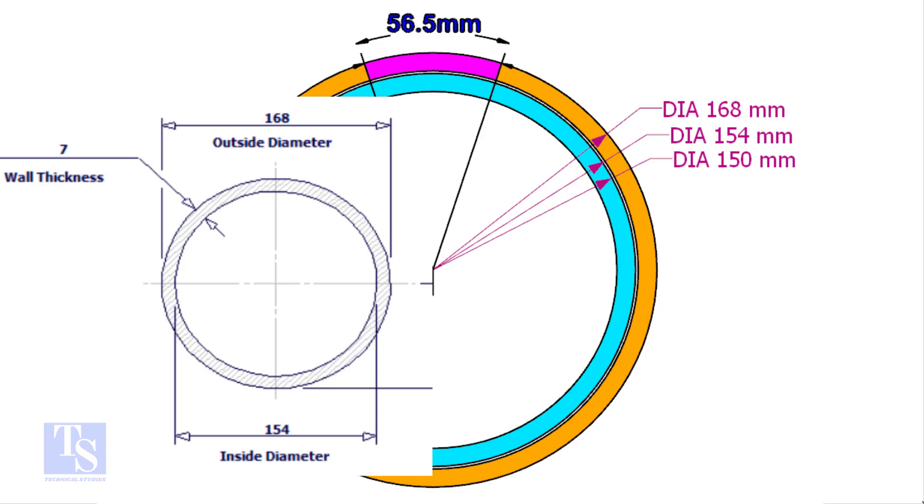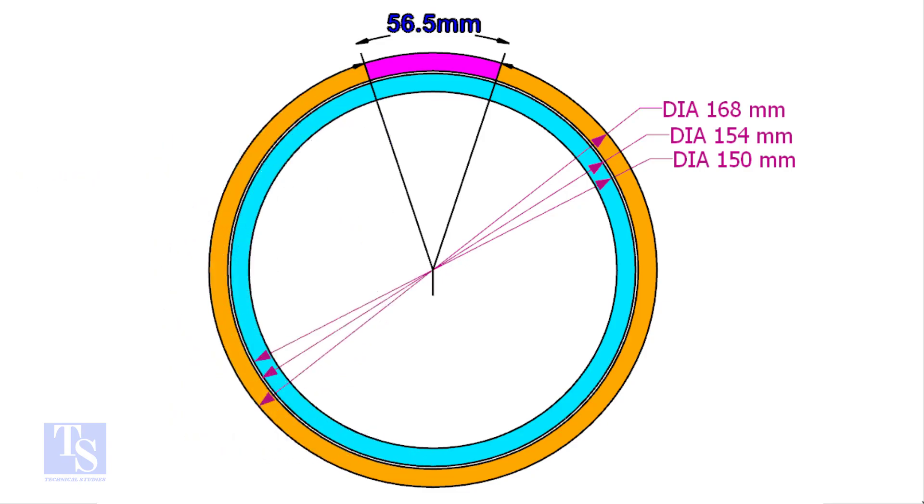The ID of a 6 inch 40 schedule pipe is 154mm. The OD of the clamp shall be 4 to 5mm less than the pipe ID.